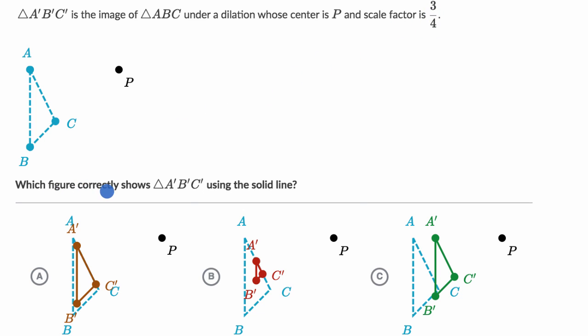Which figure correctly shows triangle A prime B prime C prime using the solid line? So pause this video and see if you can figure this out on your own.